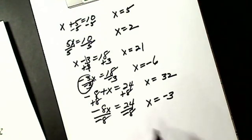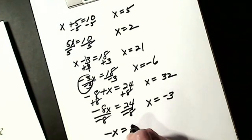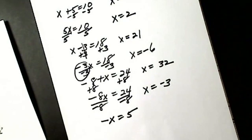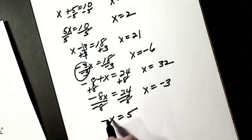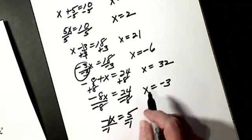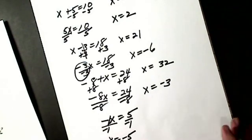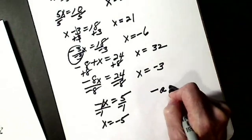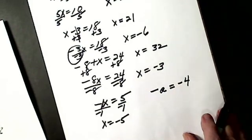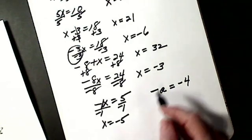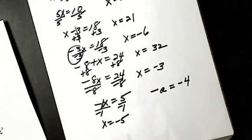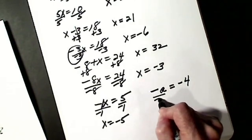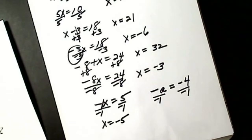The only one you have to be careful of is if I have something like negative x equals 5 and they say solve for x — we're not done. Right now this is solved for negative x. You have to know that if there's no coefficient, a 1 is understood. So I do the same thing: divide by negative 1, and I get x equals negative 5. Let's say I have negative a equals negative 4, and I have to solve for a. Right now this is solved for negative a. I divide each side by negative 1. Like signs are plus, so I get a equals 4.